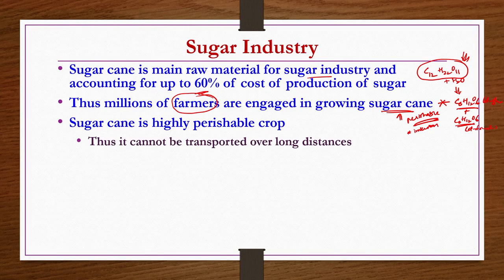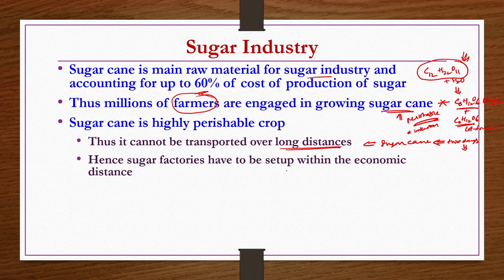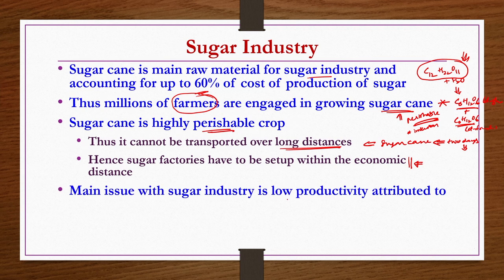Sugarcane is a highly perishable crop — it cannot be transported over long distances and must be used within 2 days of cutting. If not processed within 2 days, inversion of sucrose takes place and you get glucose and fructose rather than sugar. Hence, sugar factories must be set up within an economic distance from the sugarcane cultivation fields. The main issue with sugar industry is low productivity.